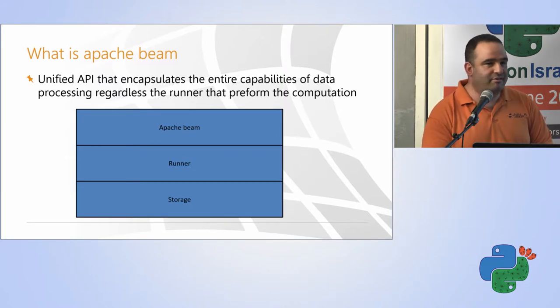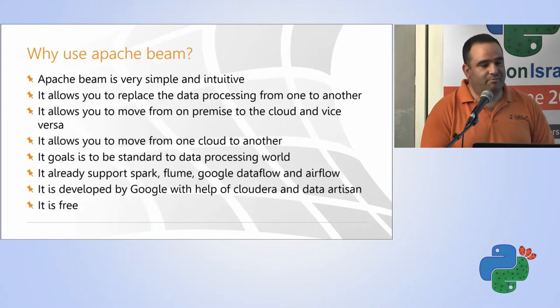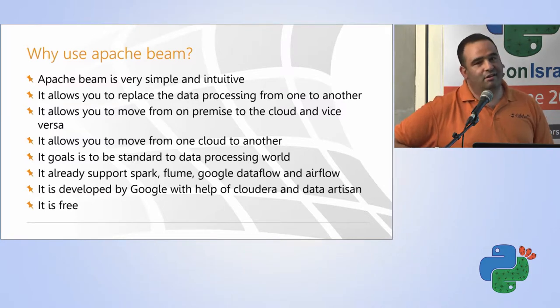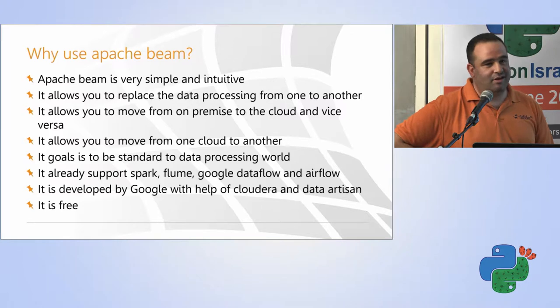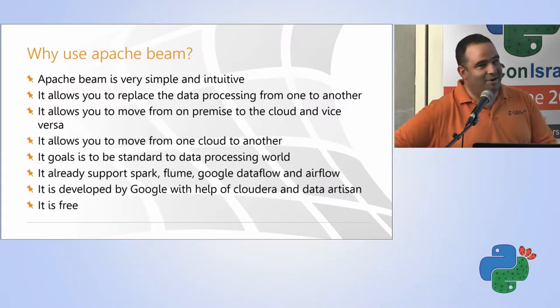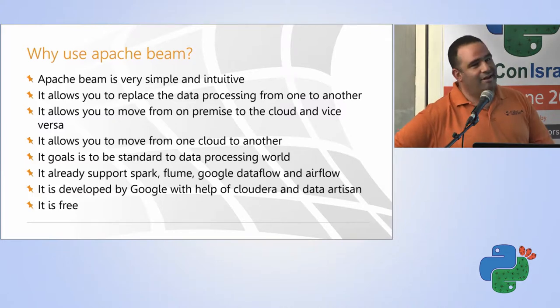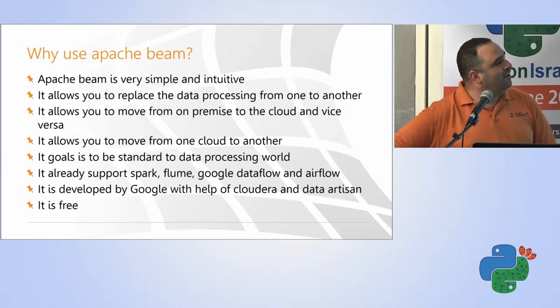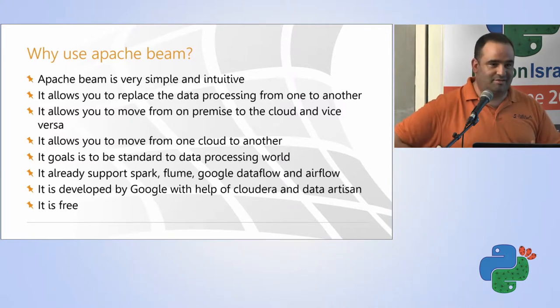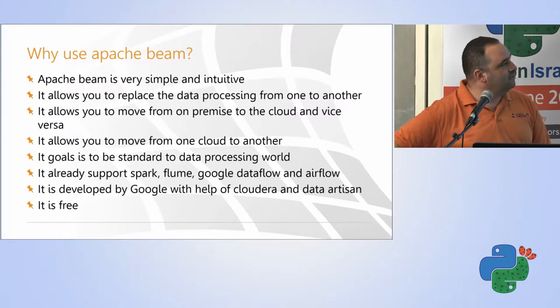Of course, every runner will have its own adapter to adapt the code of Apache Beam. So, this will be very great because, first of all, you have one API that you can learn and then I myself that working in lecturing many courses will lose a lot of jobs because now I can't teach Spark and Flume and all kinds of technology. I need to only teach Apache Beam, but I have lucky it's still in early stages. But the most important thing is that I can just replace my data processing framework and choose another one and doesn't need to rewrite my code. And this is really great.